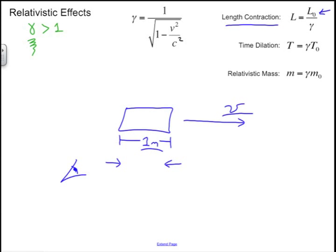Our equation shows this because gamma is a value greater than 1. So L-naught up here is where we would have had 1 meter, and if gamma was, for example, 2, then the stationary observer would see a length of 0.5 meters.